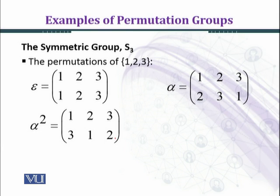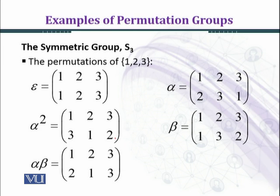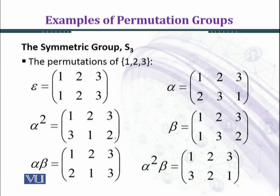You can verify alpha squared by composing alpha with alpha, as we did earlier. Next, beta is the permutation 1→1, 2→3, 3→2. Multiplying gives: 1→2, 2→1, 3→3. And another product gives 1→2, 2→2, 3→1, completing further permutations.